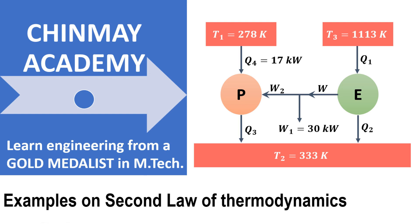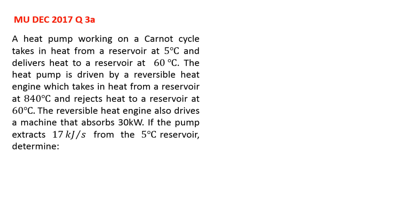In this video, we'll try to understand how to solve an example from the second law of thermodynamics. So let us see the problem statement: a heat pump working on a Carnot cycle takes in heat from a reservoir at 5 degrees centigrade and delivers heat to a reservoir at 60 degrees centigrade.